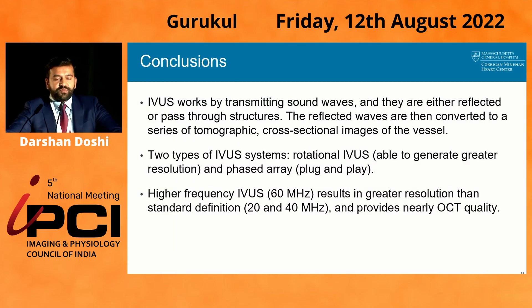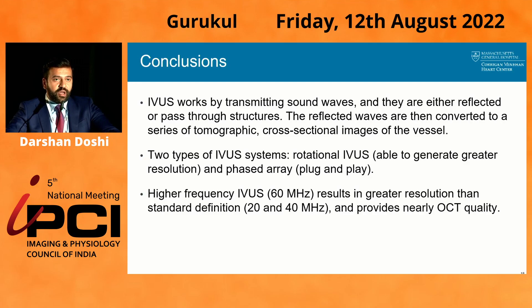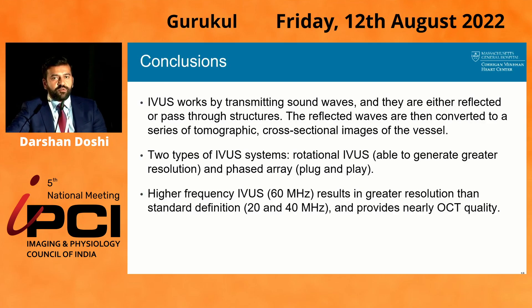In conclusion, IVUS works by transmitting sound waves that are either reflected or pass through tissue; whatever is reflected back generates the cross-sectional images. There are two types of IVUS systems — rotational and phased array — with phased array giving lower resolution compared to rotational IVUS. Now with higher-frequency 60 MHz catheters, you can get nearly OCT-quality imaging.